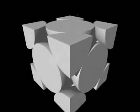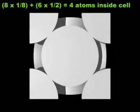The six face atoms each lie one-half inside the cell. When combined with the vertex atoms, this gives the equivalent of four atoms inside the cell.